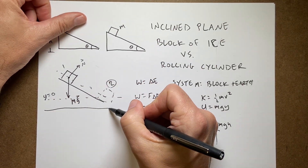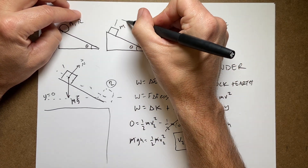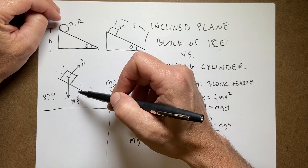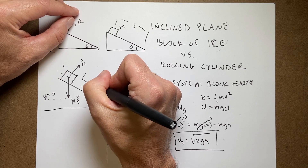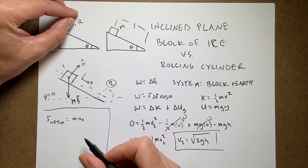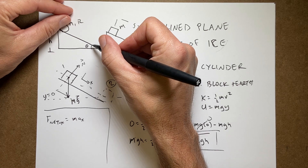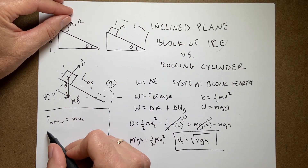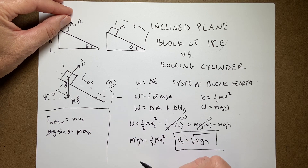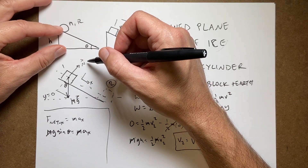Now I want the acceleration. I could find the component of gravity along the incline directly. Setting x along the incline, the net force in x is mg·sinθ, so ma_x = mg·sinθ, giving a_x = g·sinθ. But I can't use that same approach for the rolling case, so let me also derive it another way.